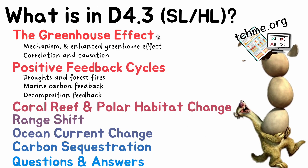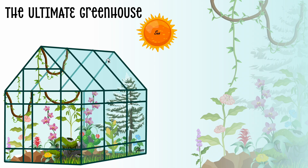First we're going to talk about the greenhouse effect and how exactly it applies on Earth. We're going to explain it in terms of a real greenhouse, because if you understand how it works in terms of a real greenhouse, understanding how it applies on Earth will be really easy. A greenhouse is a special structure that can absorb and retain a lot of heat, which means the temperature inside is unusually high. A lot of people use greenhouses because certain species of plants require these higher temperatures to grow or be cultivated.